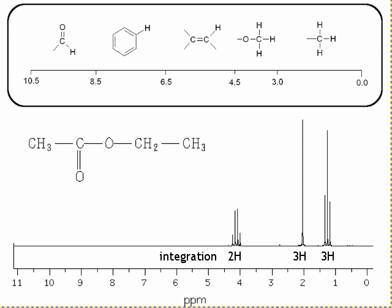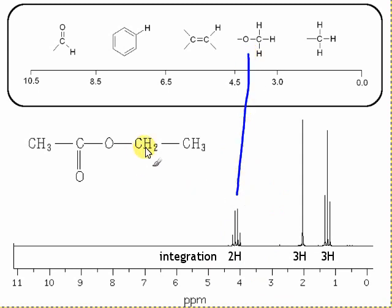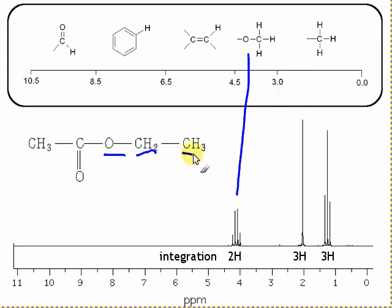Looking at the chemical shift regions, the CH2 group is between 3 and 4.5, which is consistent with being on a group next to oxygen. The CH3 groups don't have such a high chemical shift — they're in a lower region because there is no neighbouring oxygen for those two CH3 groups.